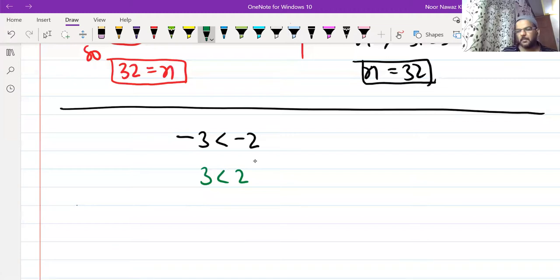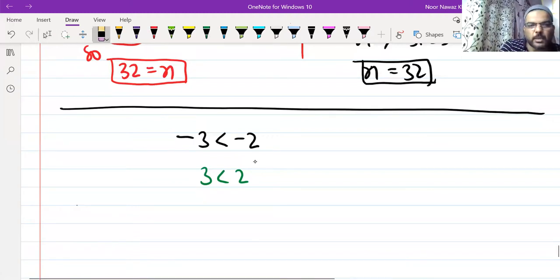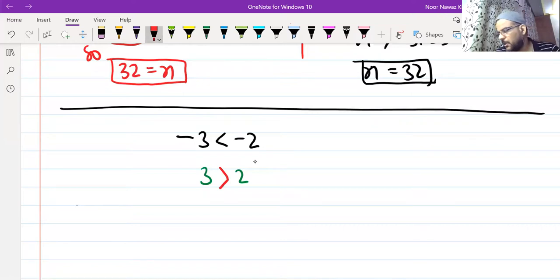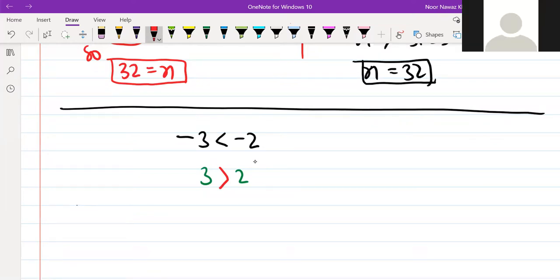Minus 4. If you don't change the direction, the statement becomes false. So as you have minus cancelled, what should you do? You have to change the direction. What did you change? Direction. So what should happen? Three is more than two. Do you understand?